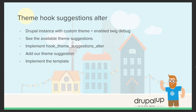In this video we're going to be taking a look at theme hook suggestions. We assume that we have a Drupal instance with a custom theme. We're going to enable Twig debug, see the available theme suggestions, implement the hook theme suggestions alter function, add our theme suggestion, and implement the template for it.